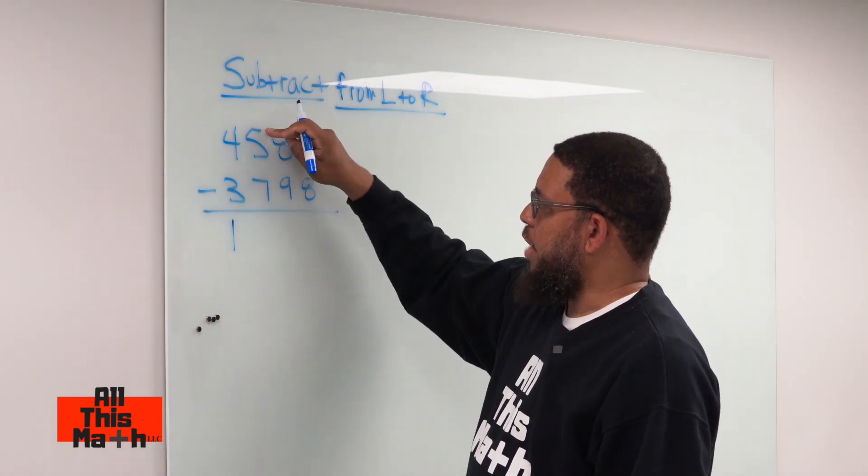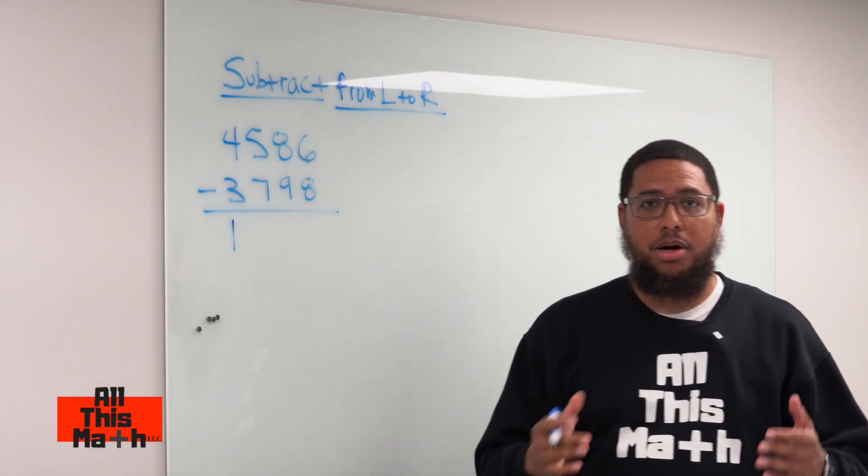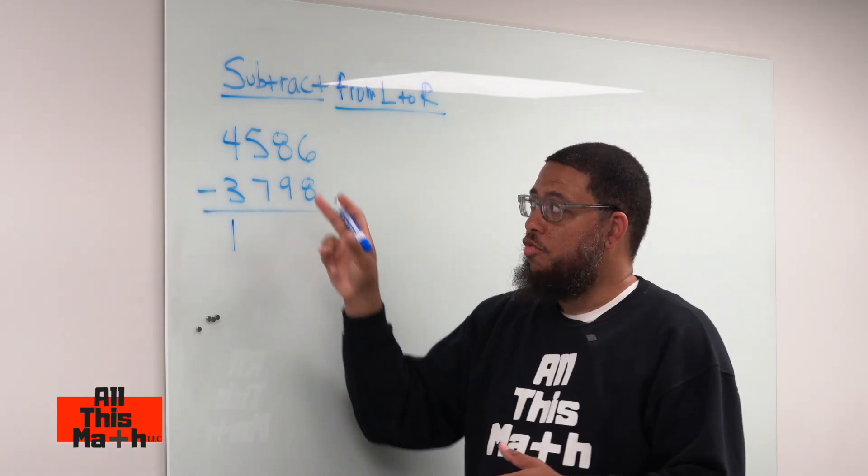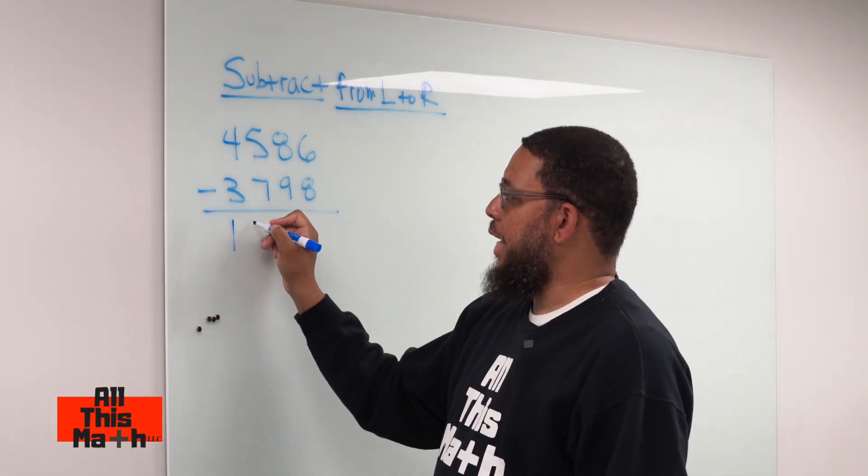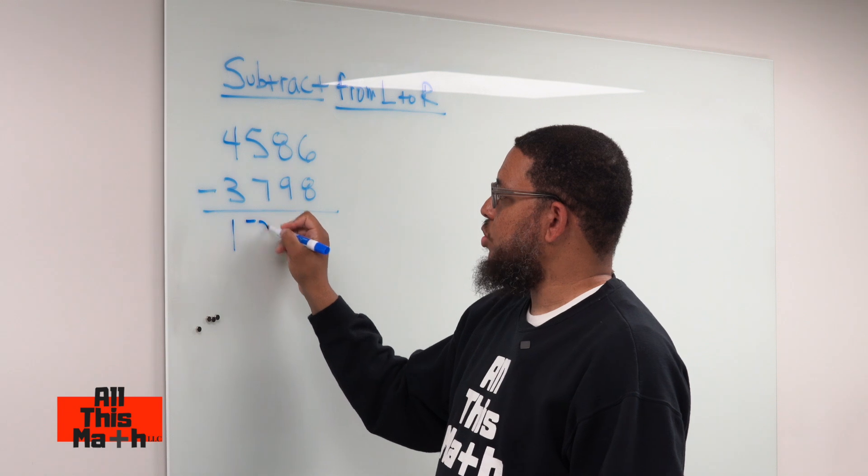And then we said 500 minus 700. Now, this involves us understanding something about negative numbers and negative values. 500 minus 700 would actually be negative 200. So we're going to write a negative 2 right there.